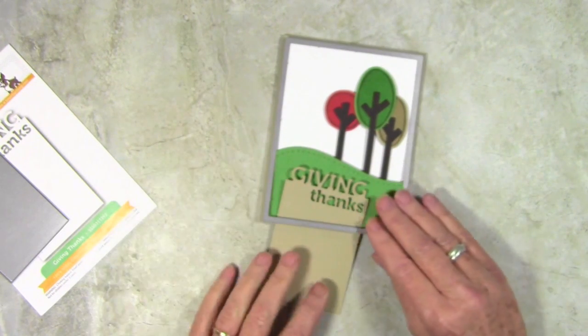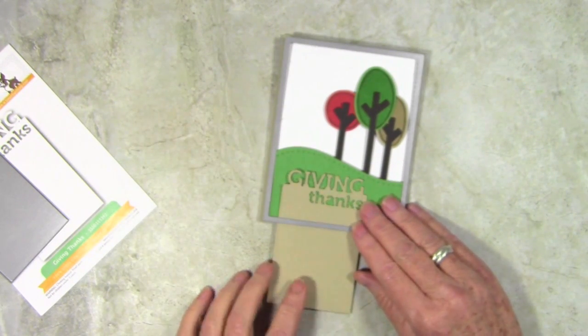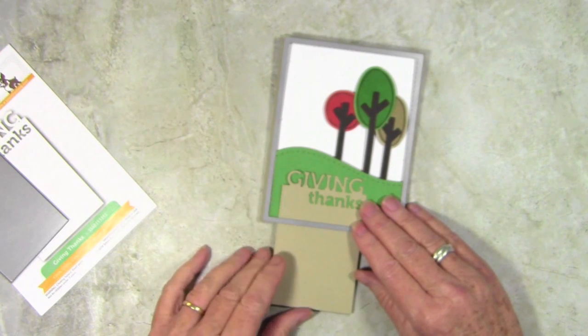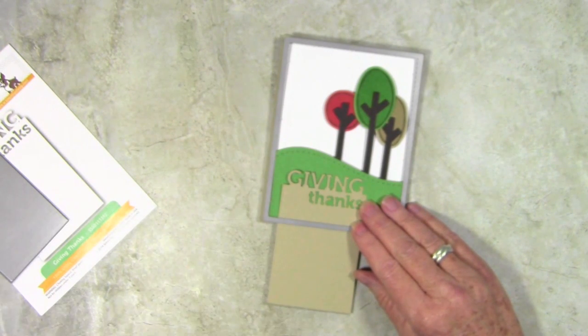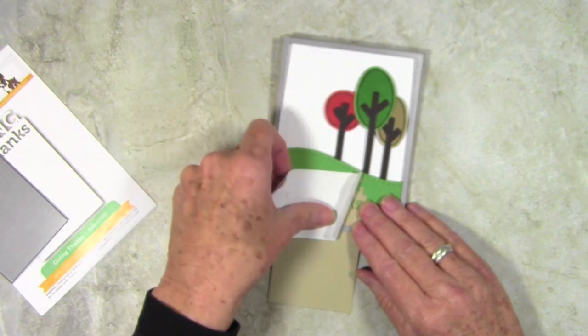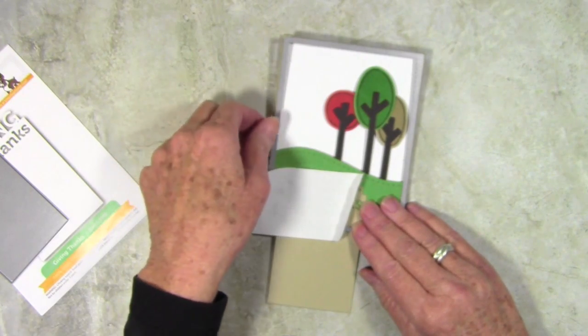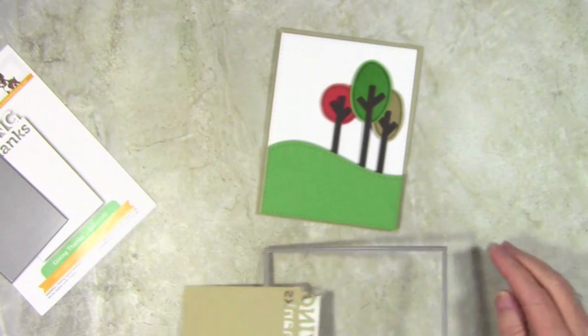So what I'm going to do is just go ahead and line this up to about the size that I want it and then I'll go ahead and add some of my temporary adhesive. I'll go ahead and die cut this and then I can just assemble my card.